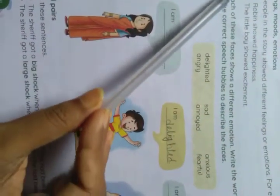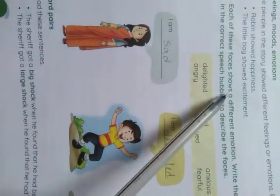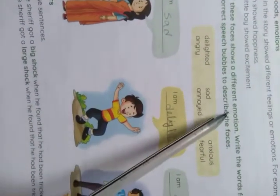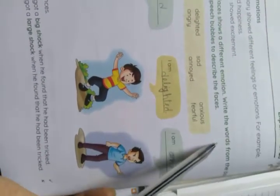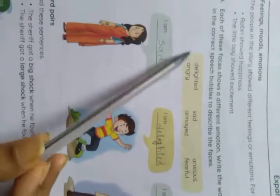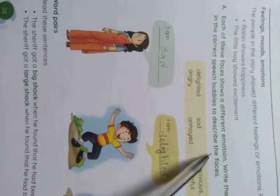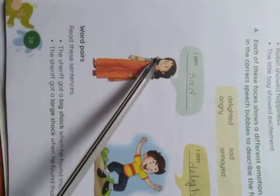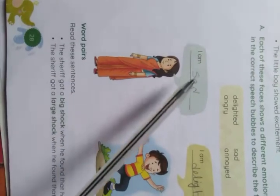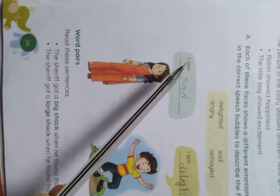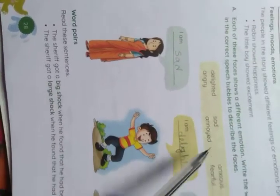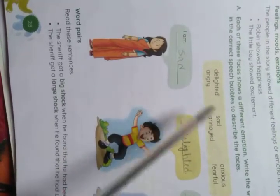Number A: Each of these faces shows a different emotion. Write the words from the box in the correct speech bubbles to describe the faces. We see a lady with a sad face, so the answer is: I am sad. Here are the options: delighted, sad, anxious, angry, annoyed, and fearful.